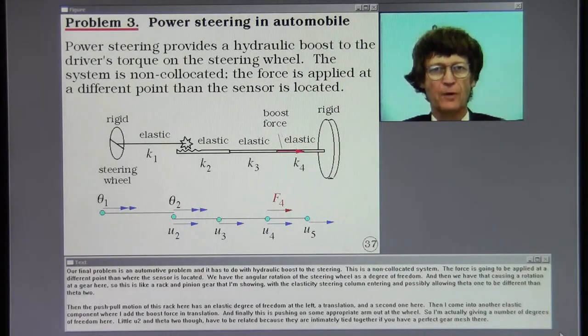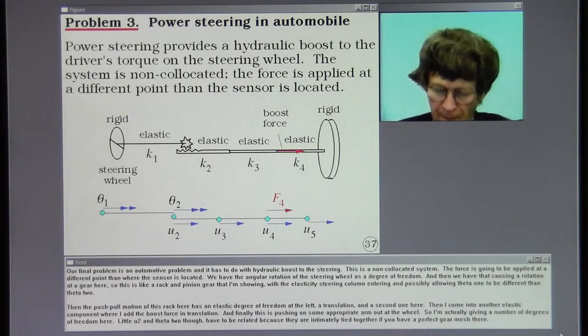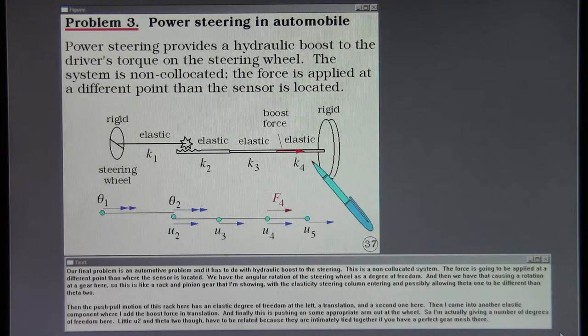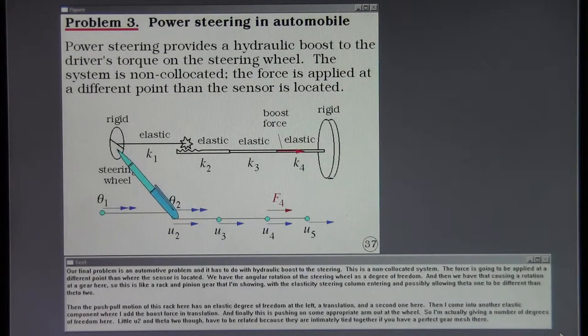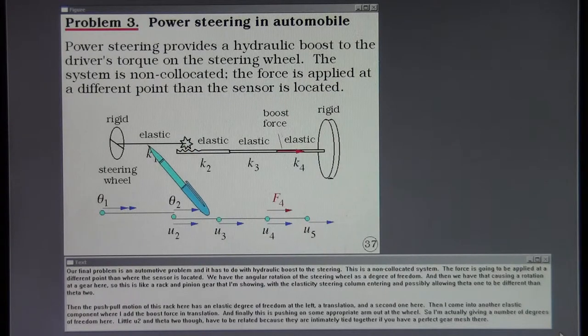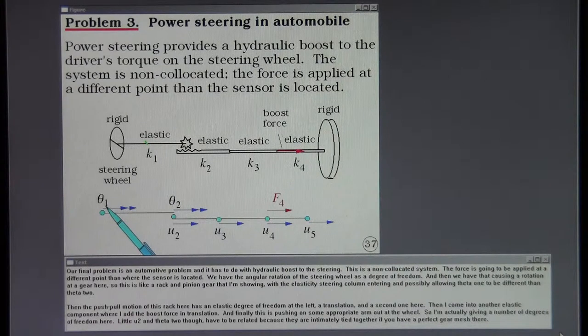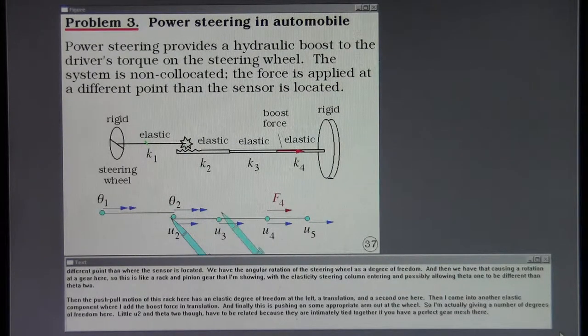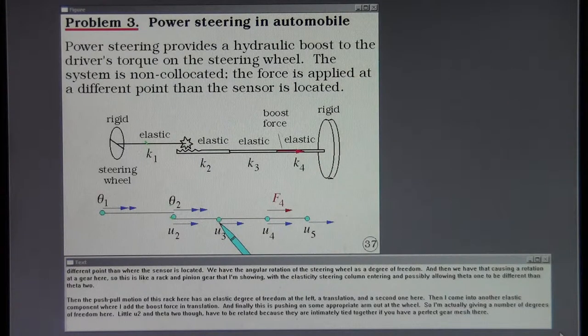Our final problem is an automotive problem and it has to do with hydraulic boost to the steering. This is a non-co-located system. The force is going to be applied at a different point than where the sensor is located. We have the angular rotation of the steering wheel as a degree of freedom. Then we have that causing a rotation at a gear here. So this is like a rack and pinion gear that I'm showing with the elasticity of the steering column entering and possibly allowing theta 1 to be different than theta 2. Then the push-pull motion of this rack here has an elastic degree of freedom at the left, a translation, and a second one here. Then I come into another elastic component where I add the boost force in translation, and finally this is pushing on some appropriate arm out at the wheel.